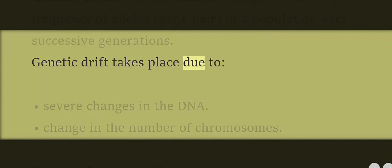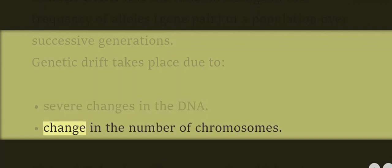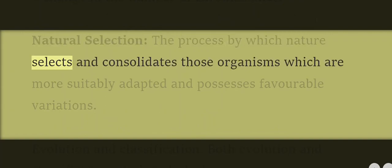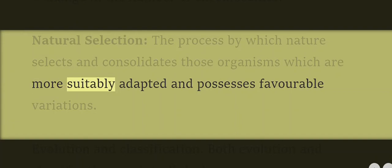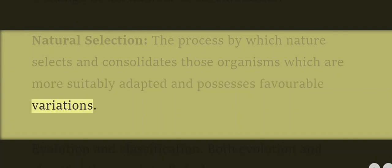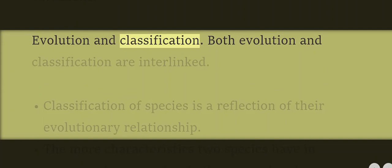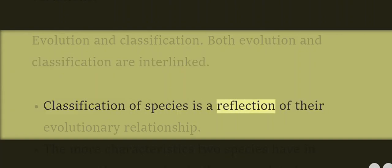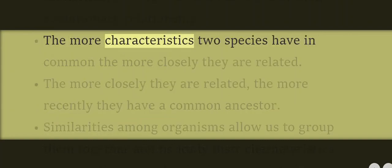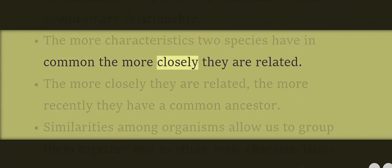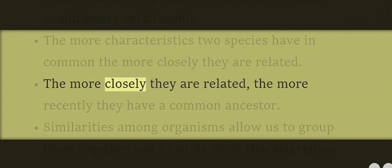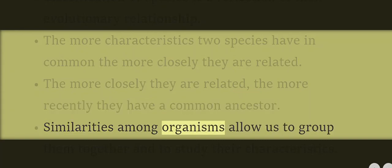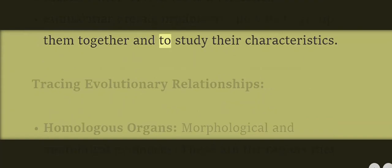Genetic drift takes place due to severe changes in the DNA or change in the number of chromosomes. Natural selection: the process by which nature selects and consolidates organisms that are more suitably adapted and possess favorable variations. Evolution and classification are interlinked — classification of species is a reflection of their evolutionary relationship. The more characteristics species have in common, the more closely they are related; the more closely they are related, the more recently they had a common ancestor. Similarities among organisms allow us to group them together and study their characteristics.